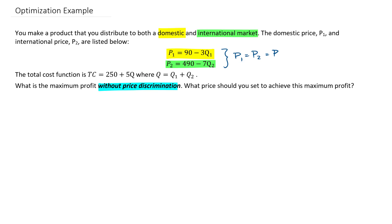In the last example we had independent markets where our pricing for both the domestic and the international market were done separately. In this example, the pricing of the two markets is going to be done together. The pricing in each market is going to be the same, and thus being done to maximize the combined profits for both markets.